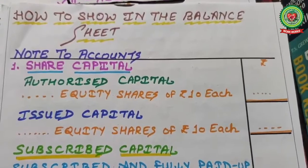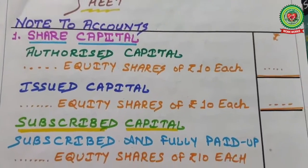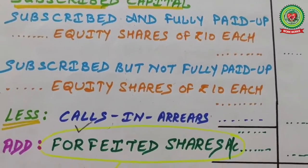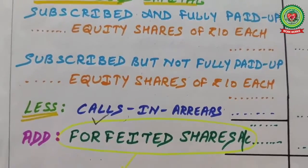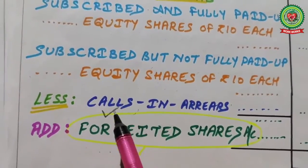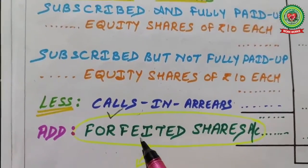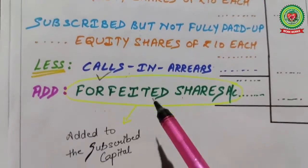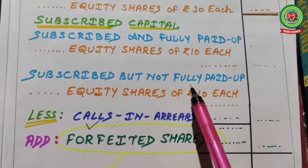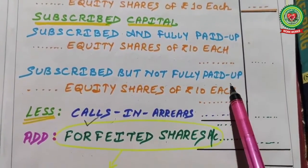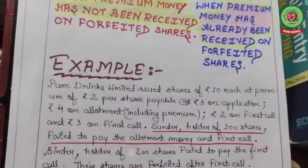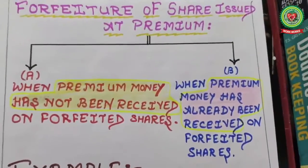How to show the forfeited amount in the balance sheet: In notes to accounts under share capital, under subscribed capital — subscribed but not fully paid — less calls in arrears, and add forfeited share account. The forfeited amount is added to subscribed capital under subscribed but not fully paid up. Now our main topic for today: forfeiture of shares issued at premium.